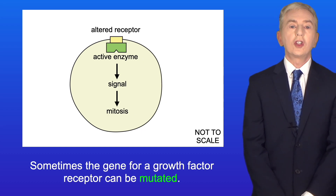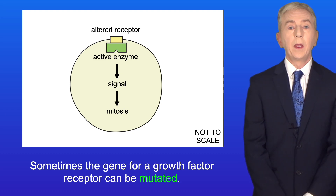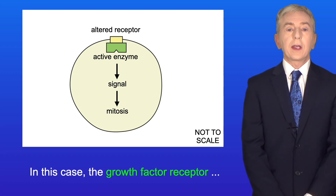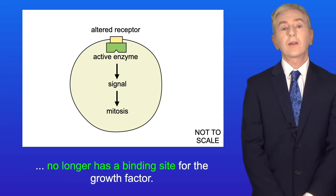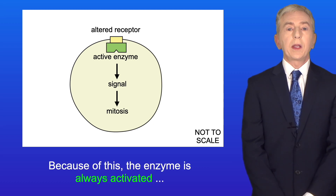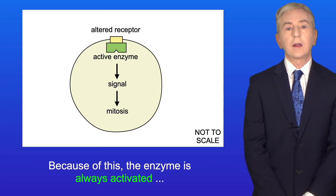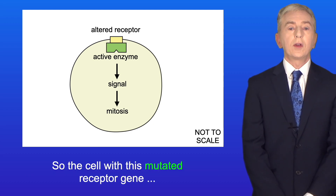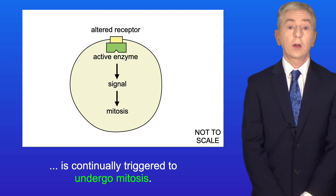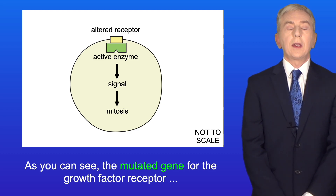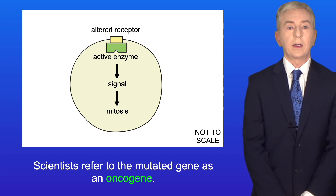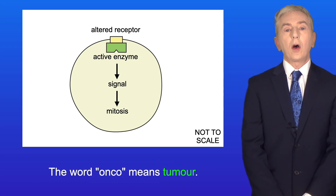Sometimes the gene for a growth factor receptor can be mutated, and this mutated gene produces an altered growth factor receptor. In this case, the growth factor receptor no longer has a binding site for the growth factor, and because of this the enzyme is always activated, even if there is no growth factor present. So the cell with this mutated receptor gene is continually triggered to undergo mitosis — the mutated gene for the growth factor receptor has led to uncontrolled mitosis. Scientists refer to this mutated gene as an oncogene; the word onco means tumour.